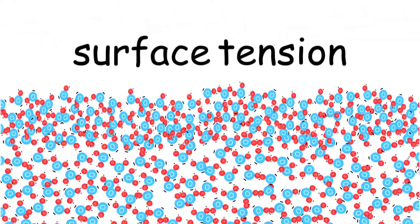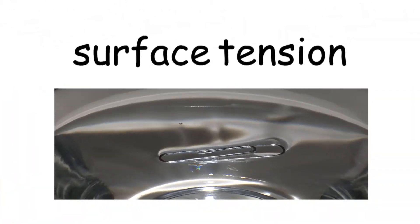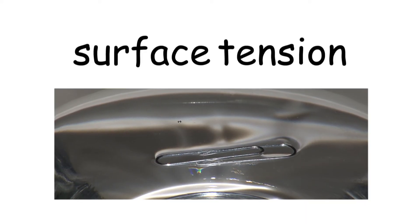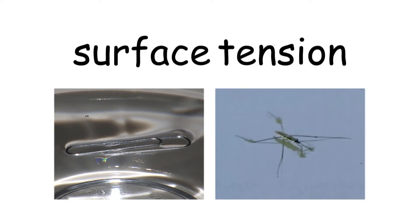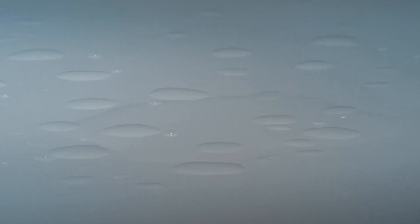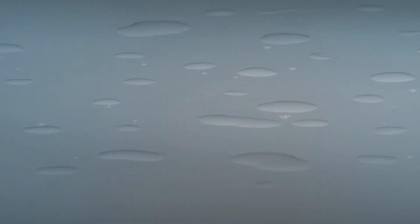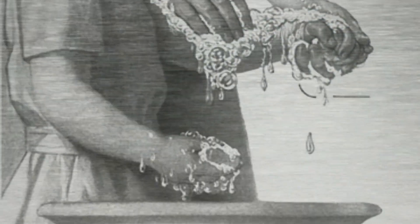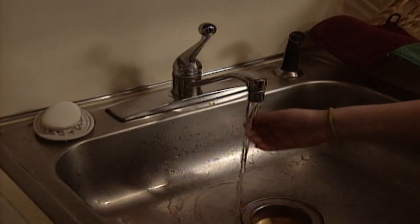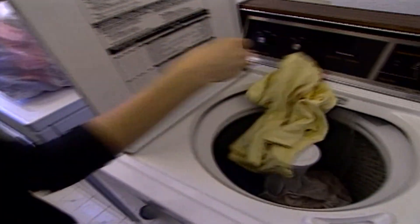Surface tension explains why a metal paperclip, more dense than water, can float on the surface of water, or why certain insects can walk on water. Surface tension is also why water beads up on a surface — it's all those H2O molecules huddling together. Which is the opposite of what you need H2O to do when you're using it to clean. You need it to spread quickly over a dirty surface, on your skin or hair, your clothes or your dishes, to start to loosen the dirt.